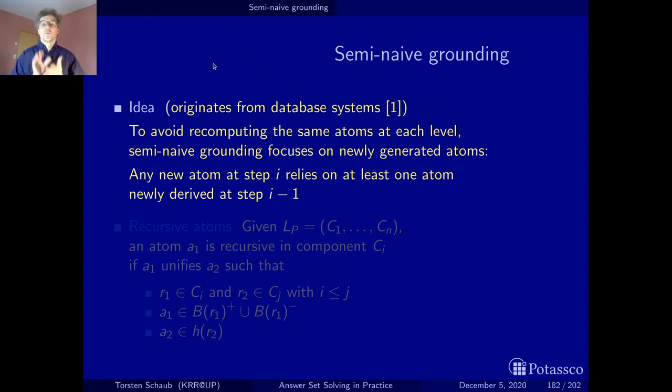And so let me just give you the brief idea. The key idea is to focus on newly generated atoms. Whenever you want to produce a new atom that is used for grounding at step i, the production of this rule must rely on at least one atom newly generated at the previous step. That's more or less the idea. That will also allow us to have a more effective procedure of grounding when using recursion.